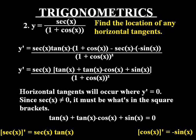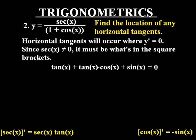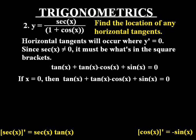And of course, a good thing to note is that horizontal tangents will occur only where y prime is equal to zero. And since secant of x cannot equal zero, it must be the stuff in the square brackets, since if it was what was on the bottom, the denominator, we would get a vertical tangent. We don't want a vertical tangent. We want a horizontal tangent.